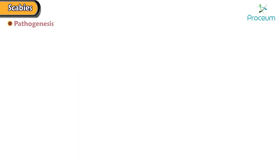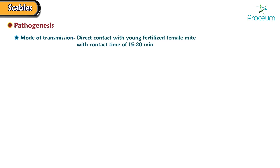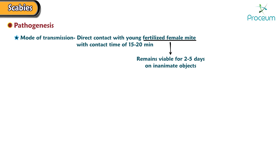Let's take a look at the pathogenesis. The mode of transmission is by direct contact with a young fertilized female mite, with a contact time of 15 to 20 minutes. The mite remains viable for 2 to 5 days on inanimate objects. Hence, transmission through fomites, such as infected bedding or clothing, is possible but less likely.